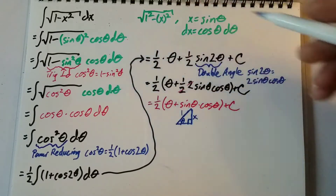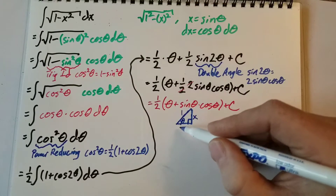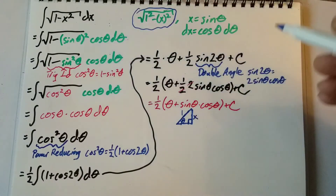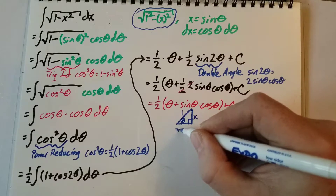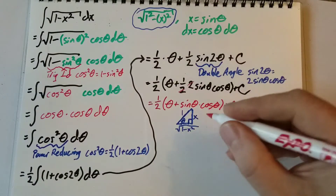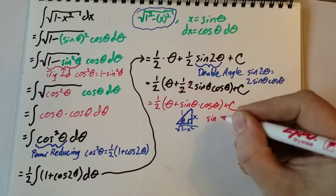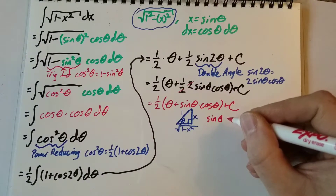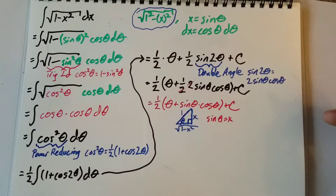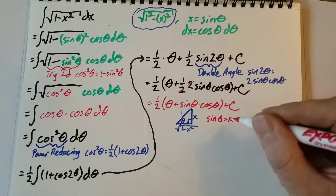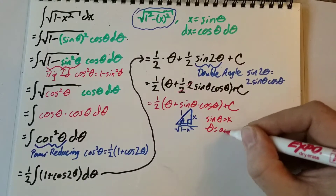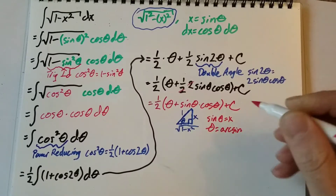The adjacent side is the square root of 1 minus x squared. So we know sine theta equals x, and solving for theta by itself, we get theta equals arcsine x.